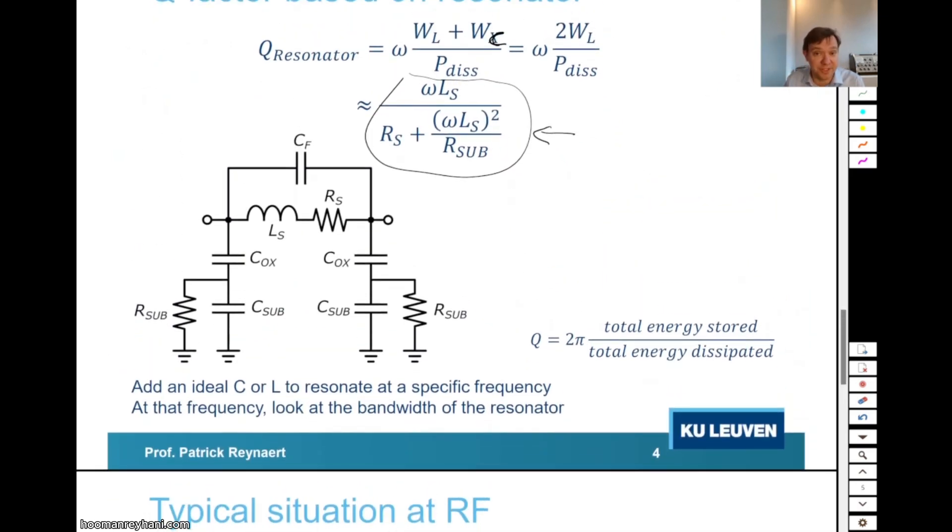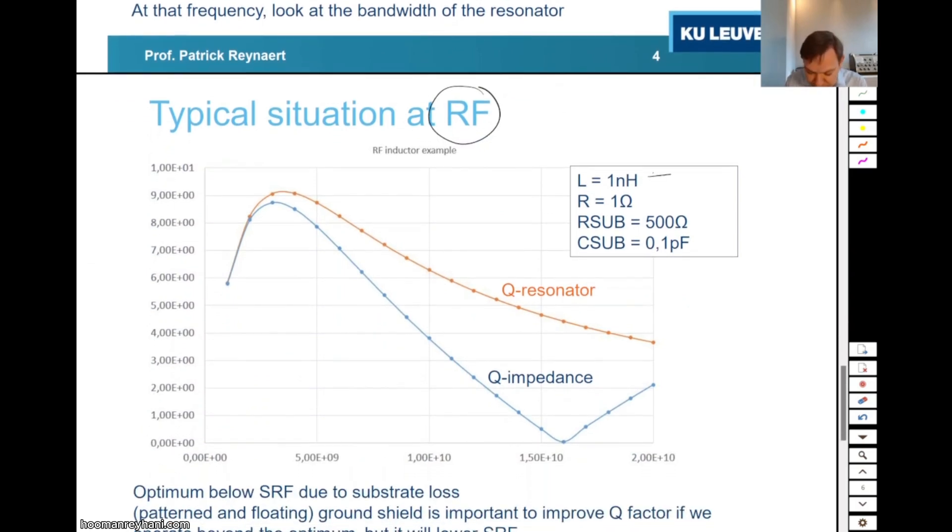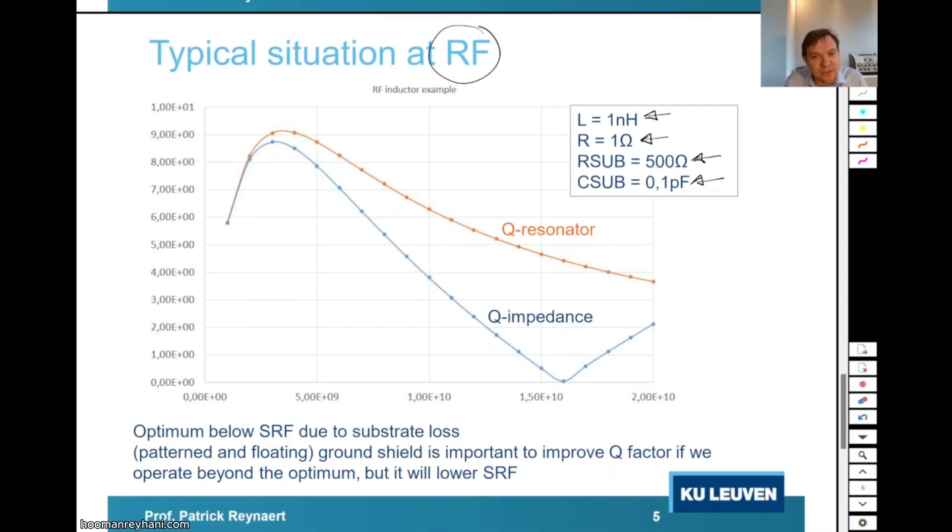Now, why is this important to really understand? It's important because people often make the wrong conclusion. Let's have a look at a typical situation at RF. I'm using an inductor here of 1 nanohenry. I'm assuming some series resistance. I'm assuming a value for the substrate resistance. And I see some capacitance. The substrate capacitance is basically the capacitance I see when looking into the substrate. So it's a kind of a combination of that C ox and C sub. If you look at the two definitions of Q factor, they are close to each other. And the impedance Q factor is like this. The resonator Q factor is like that. Impedance Q factor goes down faster because there are two reasons why the impedance-based Q factor goes down.